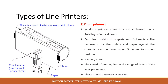In drum printers, the characters are embossed on a rotating cylindrical drum. Each line consists of a complete set of characters. The drum rotates at high speed and a magnetically driven hammer strikes the character; the hammer strikes the ribbon and the paper against the character on the drum when it comes to the correct position. It is very noisy. The speed of printing lies in the range of 200 to 2000 lines per minute. These printers are very expensive.